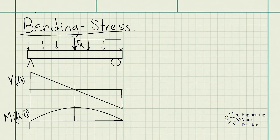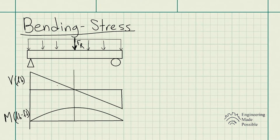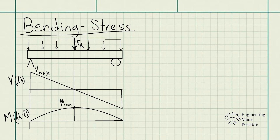Here are the internal shear and moment diagrams the beam is experiencing with respect to location along the beam. The maximum shear is at either the beginning or the end. The maximum moment occurs right where the resultant force of the uniform load is applied — this is your maximum moment and maximum shear force due to external loading.